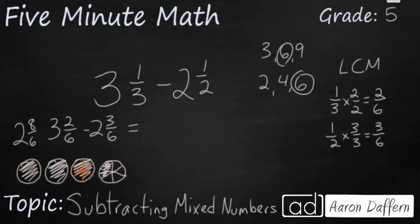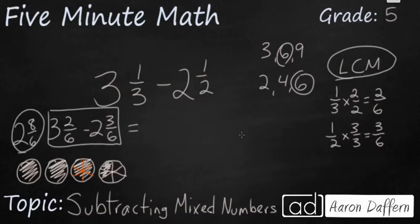You should have found 6 as your least common multiple. Rewrote your equation. It's 3 and 2 sixths minus 2 and 3 sixths. Realize you needed to regroup. So you see I've got 3 and 2 sixths at the bottom. And I rewrote it as 2 and 8 sixths. And so my answer is going to be 5 sixths.